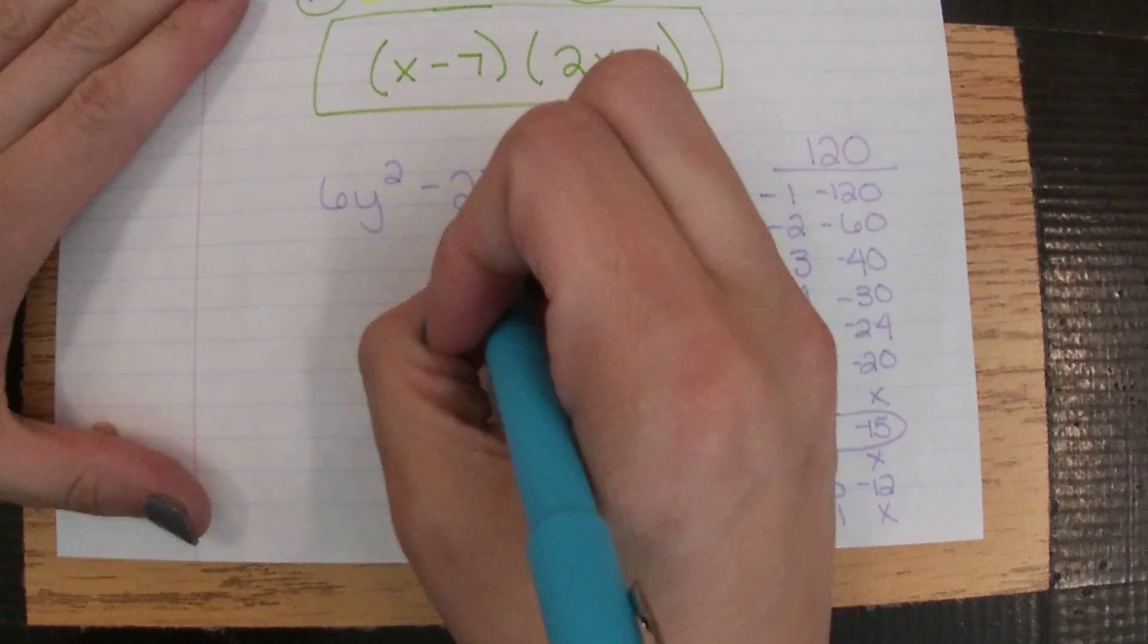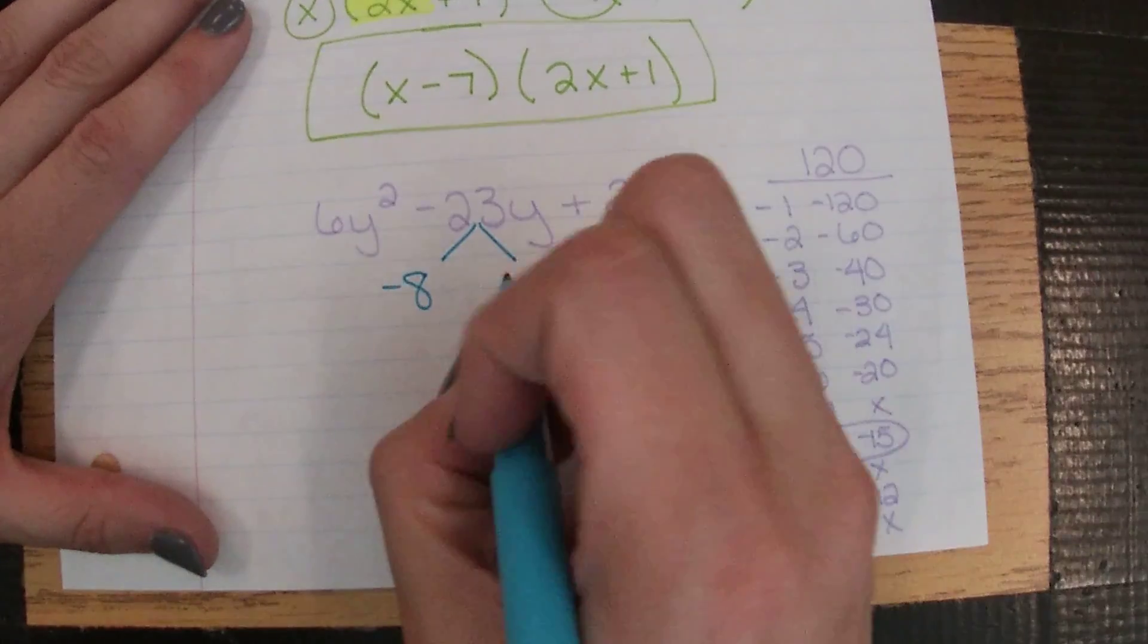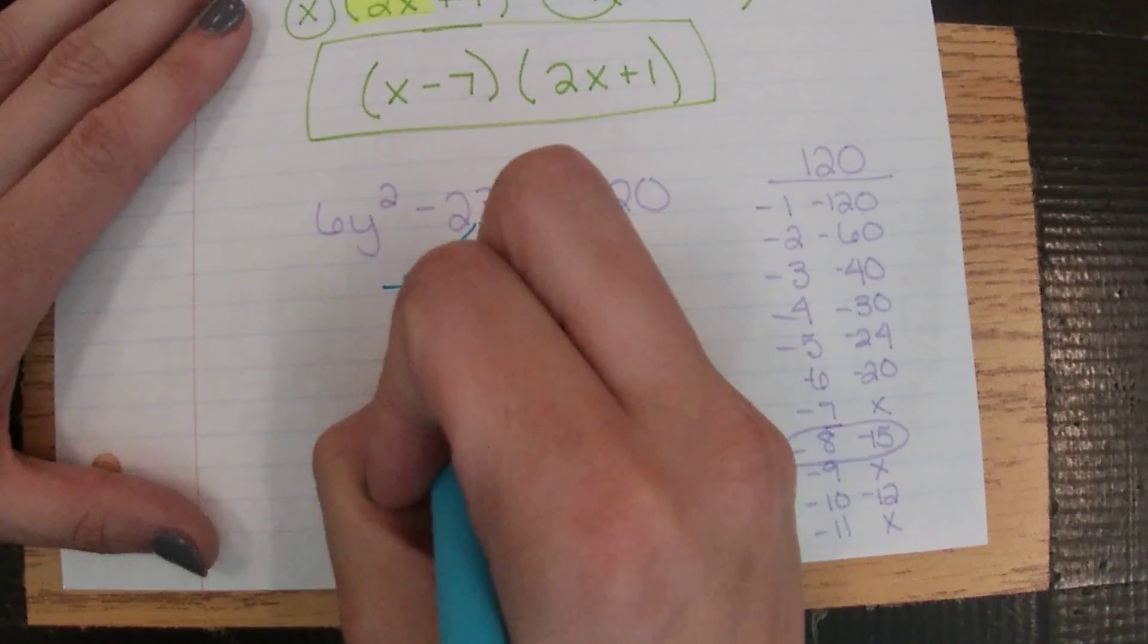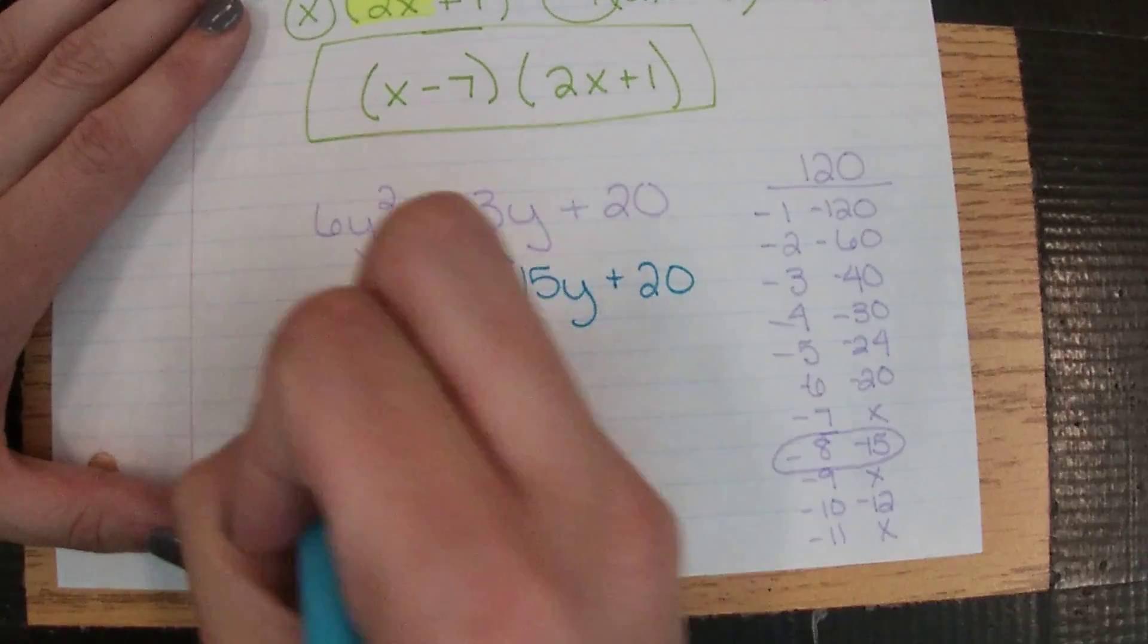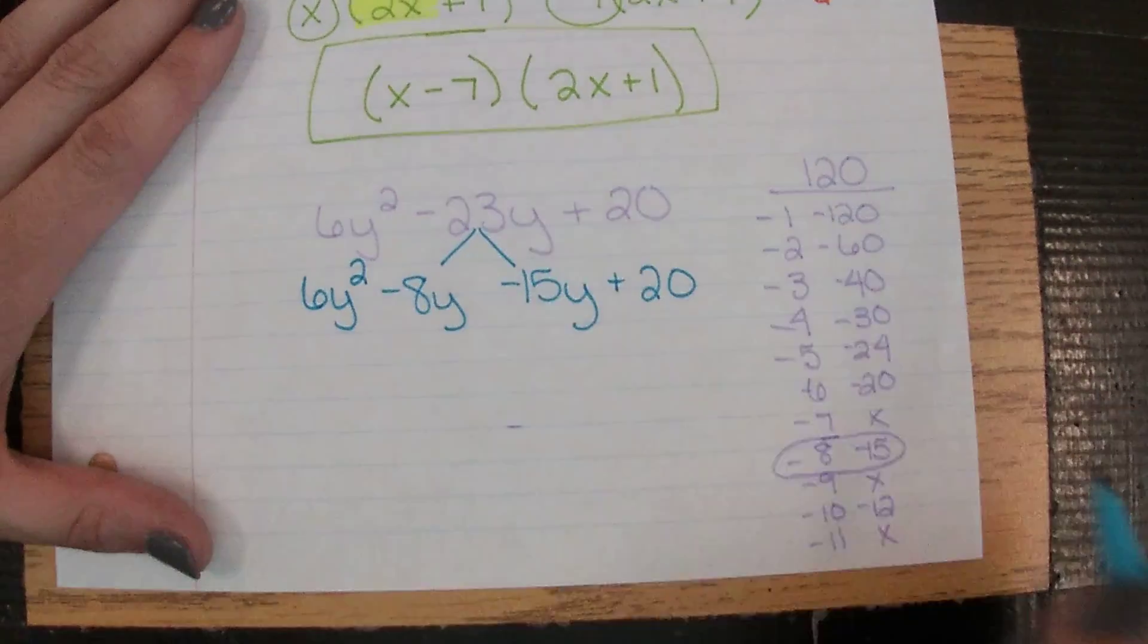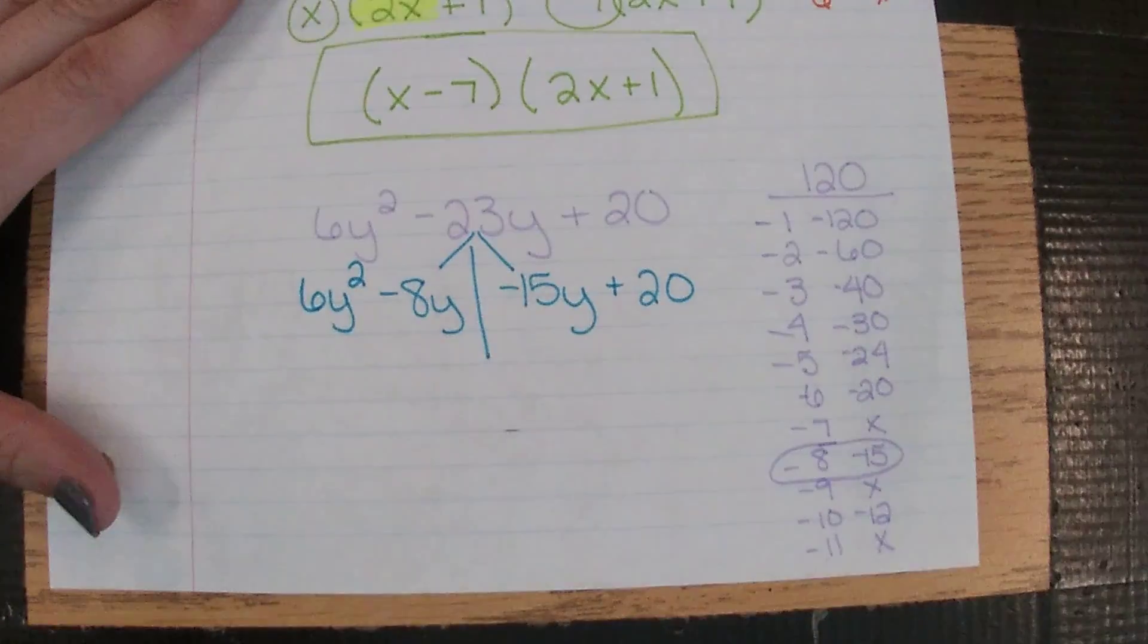So we're going to split this up into a negative 8 and a negative 15, where those both get y's. 20 is coming straight down, or 6y² is coming straight down. And then we are going to start factoring by grouping.